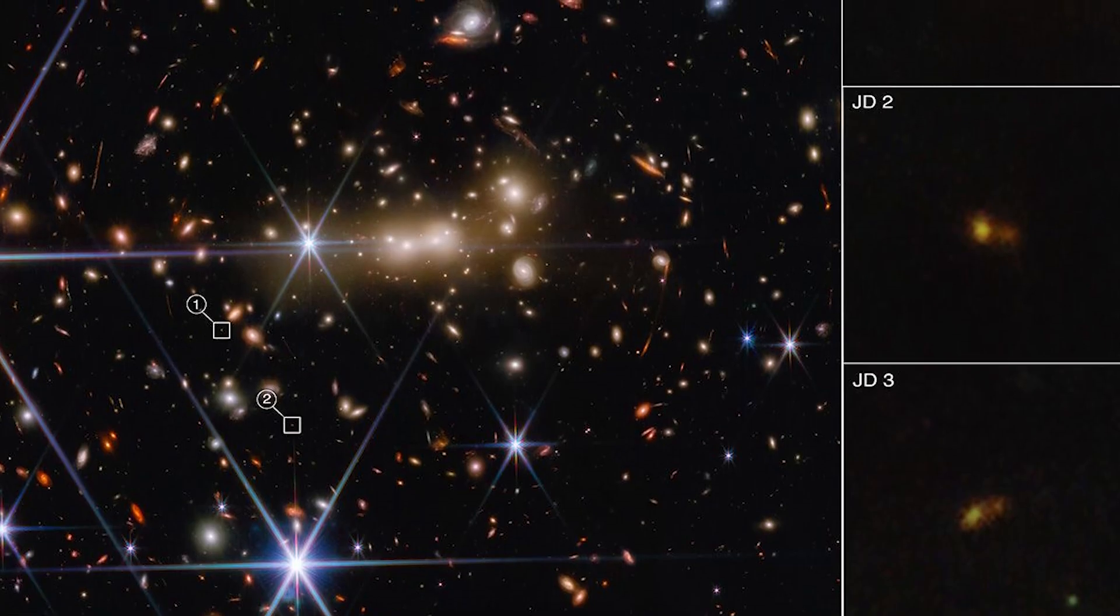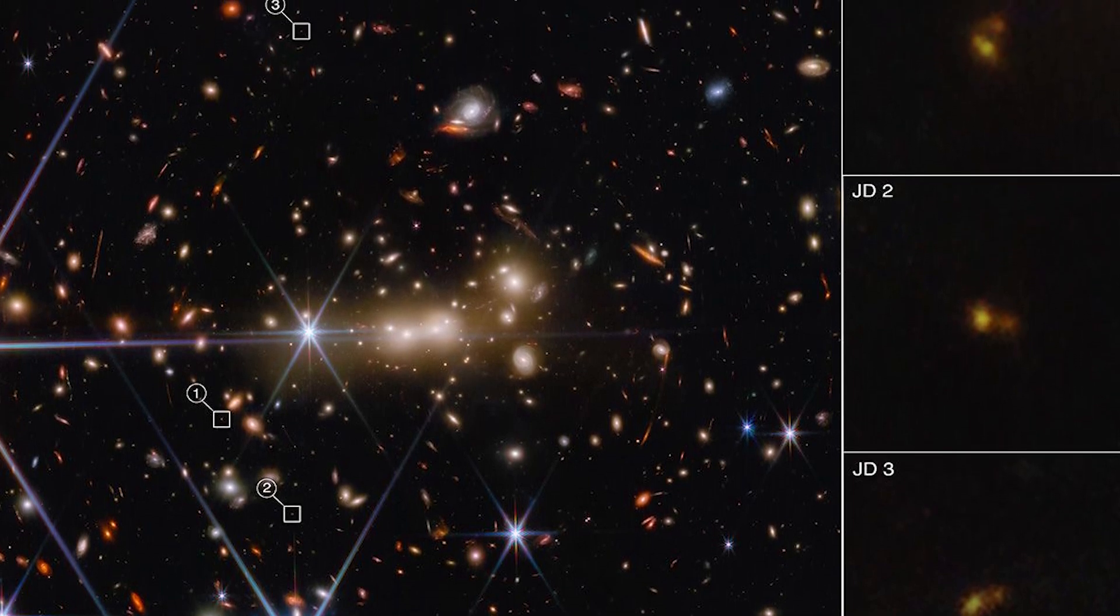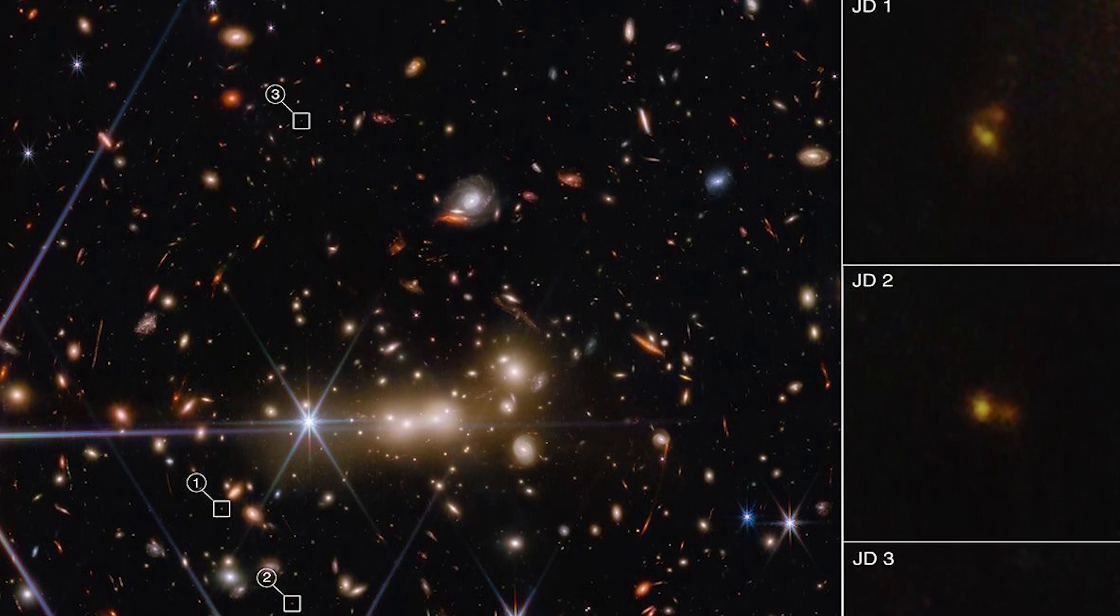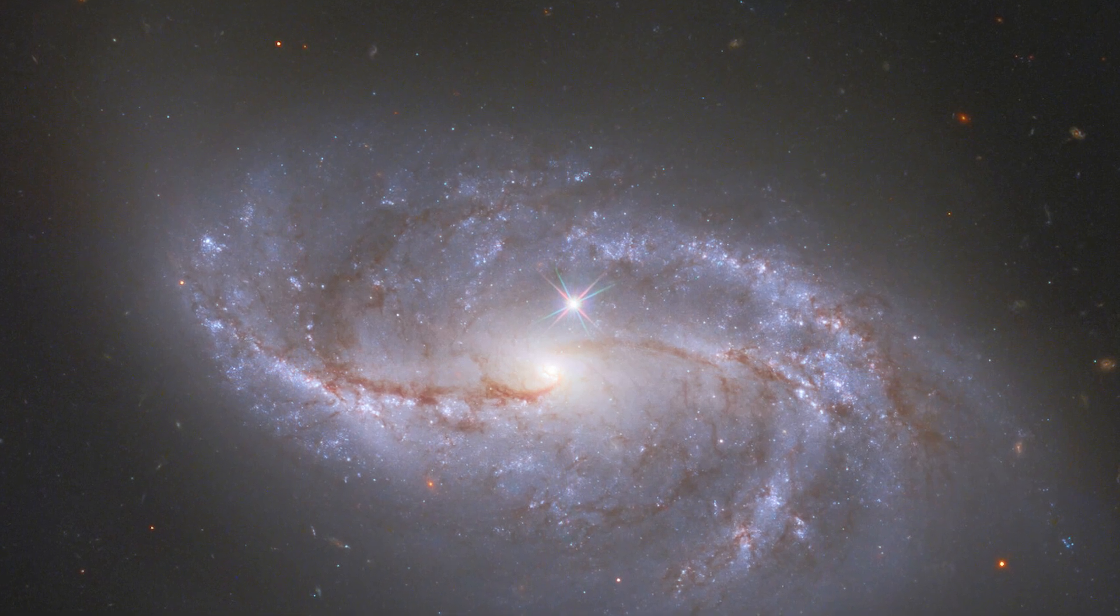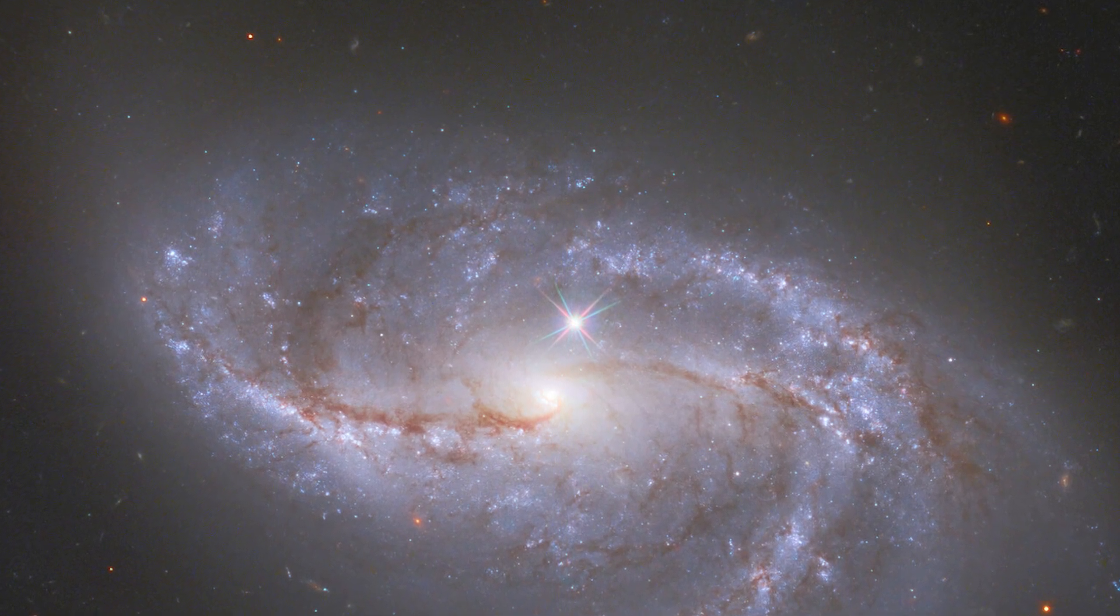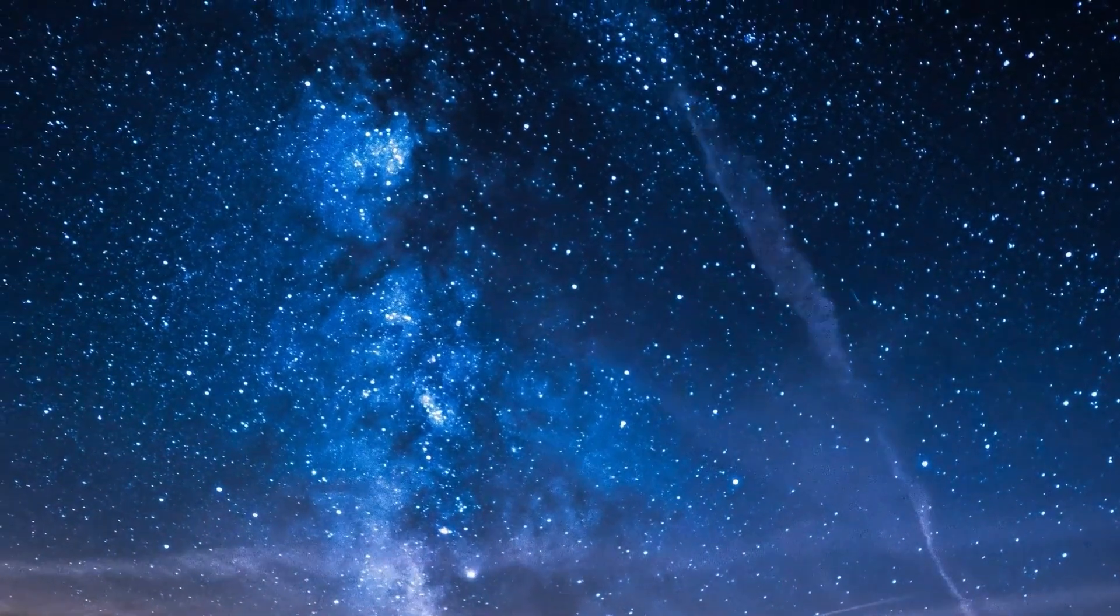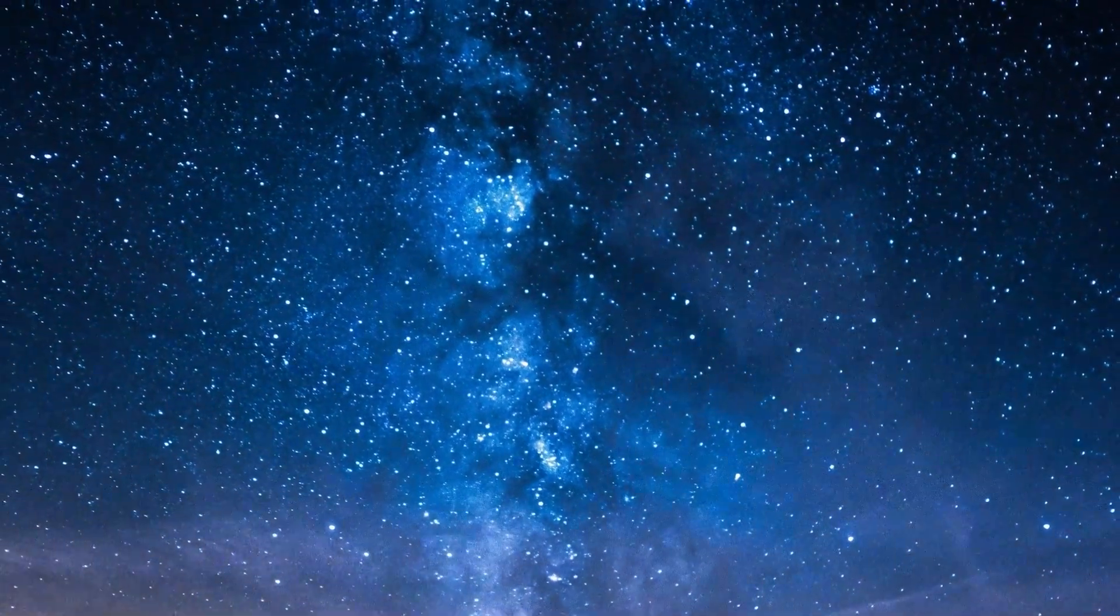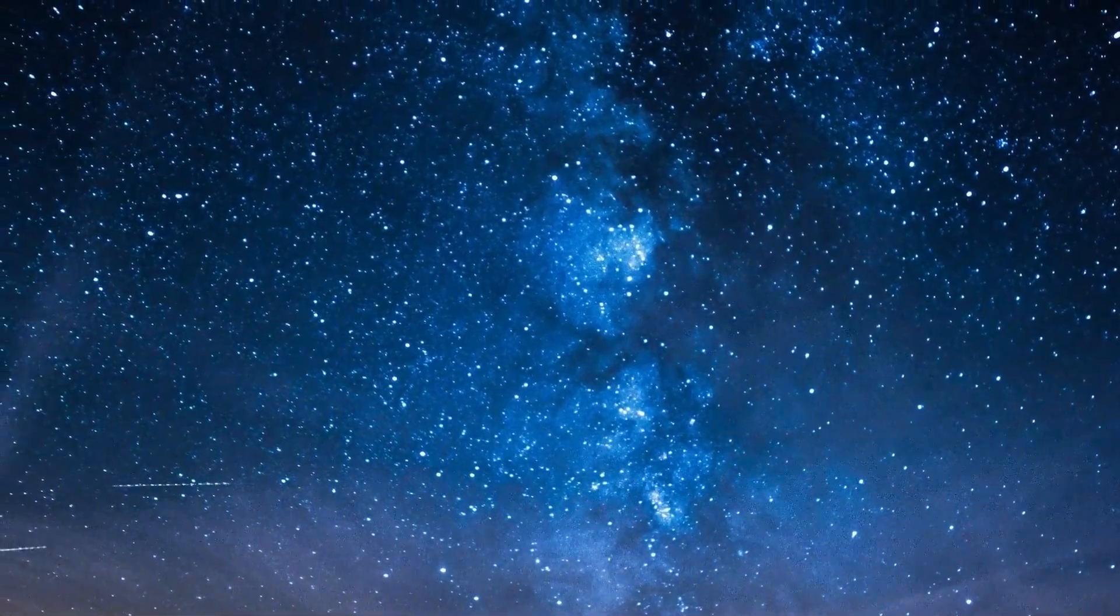The image captured by the James Webb Telescope achieved an impressive balance between depth and breadth, which could change our perception of galactic evolution. A highlight of the image is a bright foreground star in the Milky Way with unique diffraction peaks produced by the James Webb Space Telescope. Also visible are bright sources of white light surrounded by a hazy glow corresponding to much more distant galaxies within the Pandora Cluster.